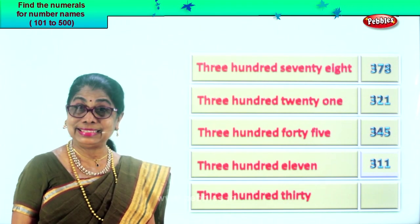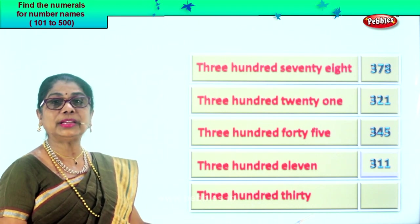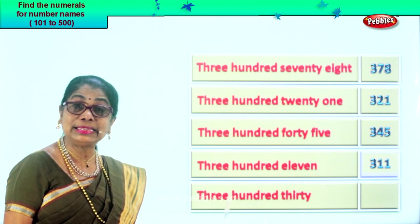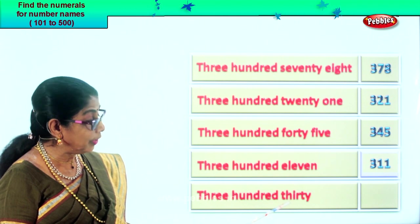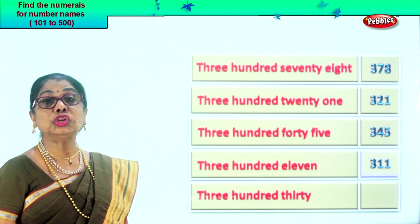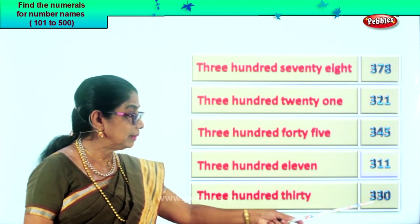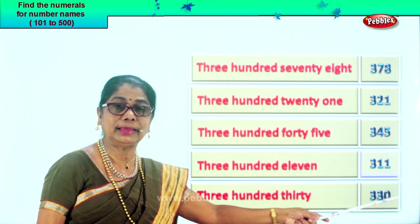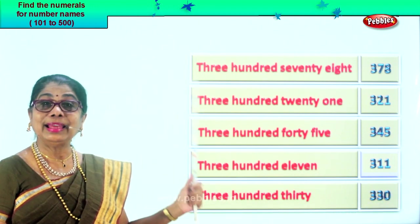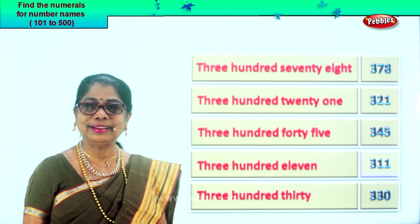Let's take the last number name: three hundred thirty. Three hundred in the hundreds place — three. Next you have thirty — three in the tens place, zero in the ones place. Three hundred thirty. Did you enjoy reading the number name and filling with the correct numeral? Good.